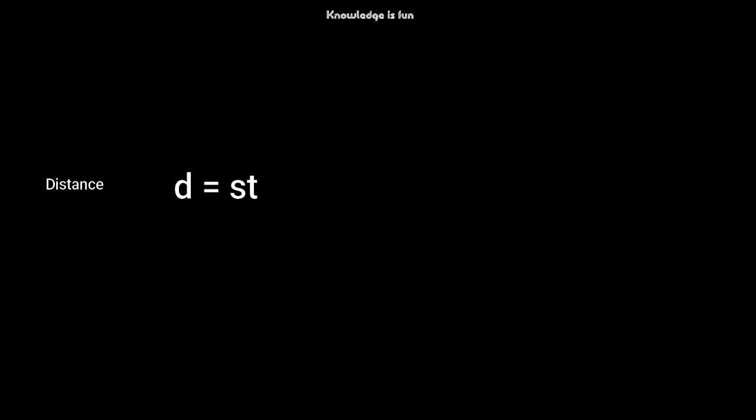What is the formula for calculating speed? You have the formula: d equals s times t. The d stands for distance, the s stands for speed, and the t stands for time. If you want to make speed the subject of the formula, you divide both sides, giving you: speed equals distance over time.